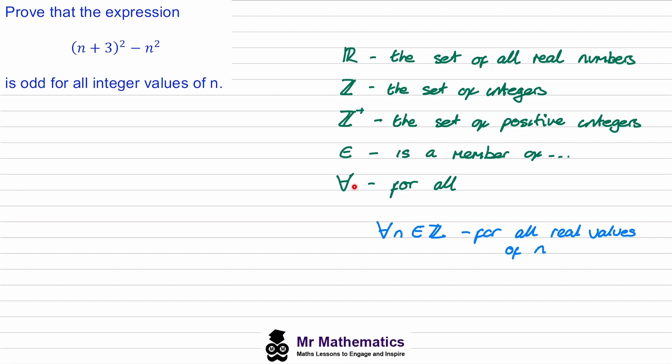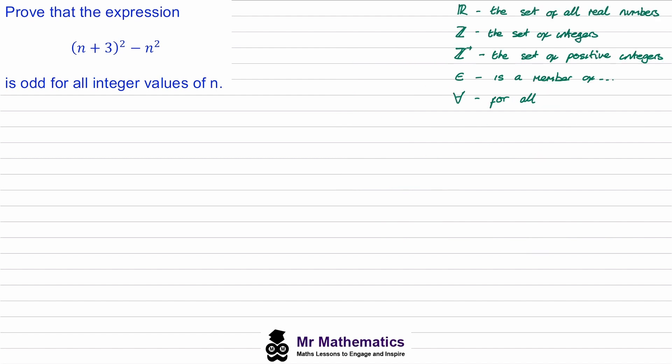If we start with our first example, we've been asked to prove that this expression is odd for all integer values of n.